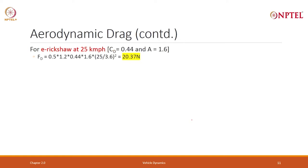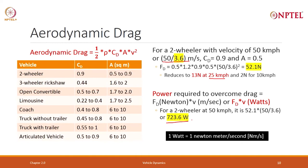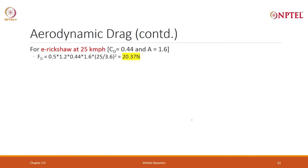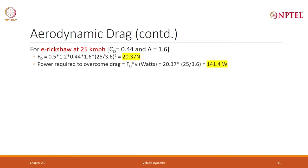What about an E-Rickshaw? The E-Rickshaw is commonly used and is limited to 25 km/h. The drag coefficient is 0.44 and area can be taken as 1.6 m². We recompute: 0.5 × rho × CD × A × (25/3.6)² and this works out to be 20.37 Newton at 25 km/h. Power required to overcome drag is that force multiplied by 25/3.6 again, and the E-Rickshaw requires only 141 watts for drag — because the velocity is very low.